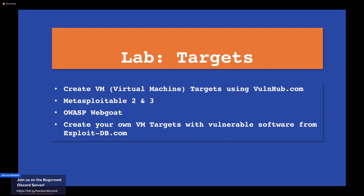For lab targets, you can get vulnerable VMs from VulnHub — there are a lot of great ones on there, some from CTFs held at conferences. Two I recommend to start with are Metasploitable 2 and Metasploitable 3, as well as the OWASP WebGoat. You can create your own target VMs by downloading vulnerable software from Exploit-DB. Since Windows licensing makes it harder to find vulnerable Windows VMs, a lot of cases you should create your own.